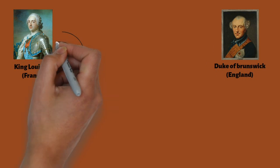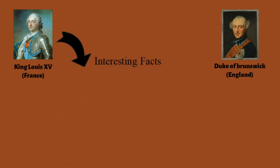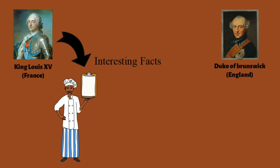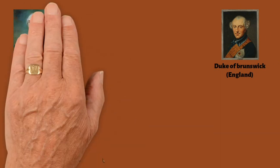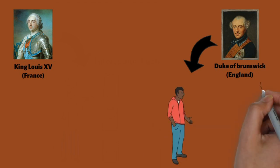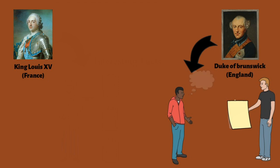We do have certain stories recorded in history — like the history of King Louis XV of France, who used to offer banquets and buffets where different courses were served separately: starters, main course, and dessert. Another recorded story is from the Duke of Brunswick, who was seen referring to a piece of paper at a banquet. When asked, he replied it was a list of dishes coming from the kitchen in order, so he could manage his appetite accordingly. Both these mentions are from the 18th century, around the 1740s and 1750s.